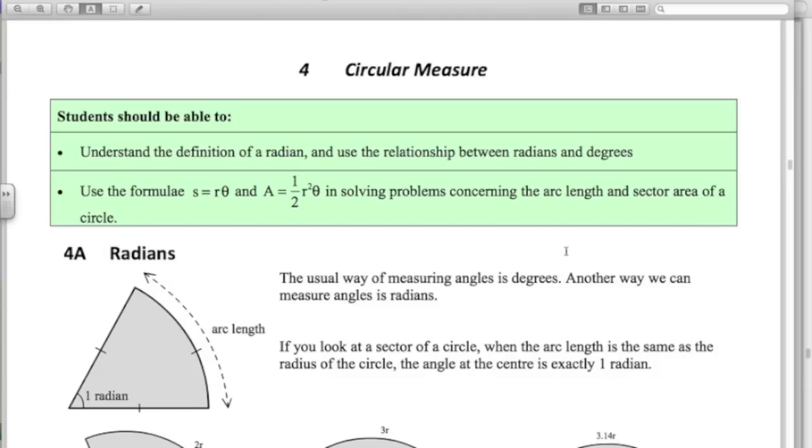Hi, and welcome to video number one for Chapter 4, Circular Measure. In this video, we're going to look at the first bullet point in the syllabus, understand the definition of a radian, and use the relationship between radians and degrees.